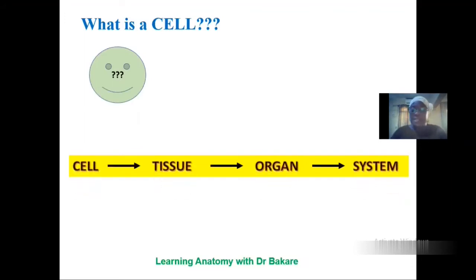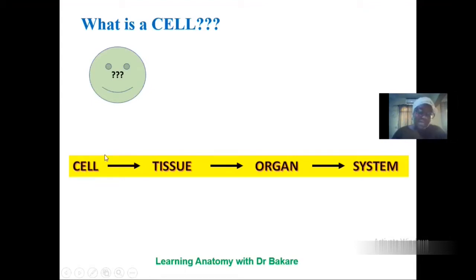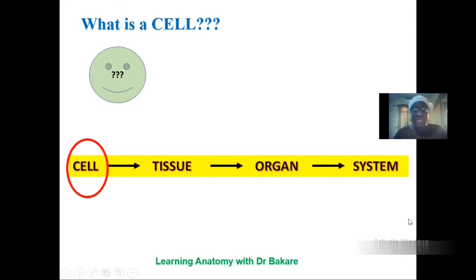Let's go back to the basics, knowing that two or more cells in the body come together to form tissue, and two or more tissues come together to form an organ. Two or more organs come together to form the entire human body. So going back to the cell, it means that the cell is the smallest unit of the human body.